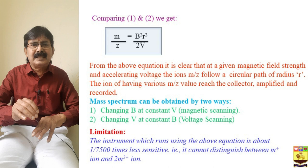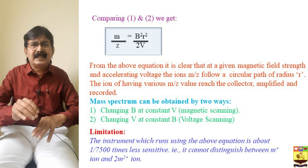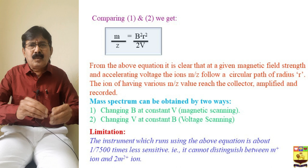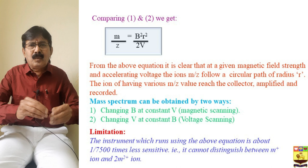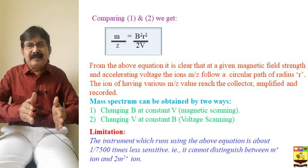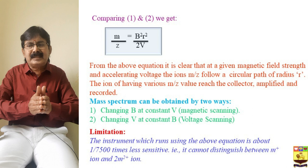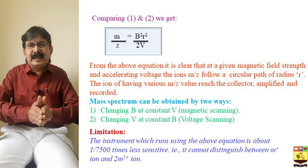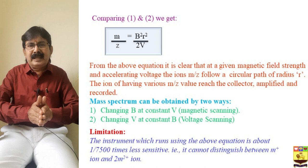Here we have a limitation regarding sensitivity — how well the instrument can separate one fragment from another. For example, if we have two fragments, one of 900 mass and another of 1000 mass, the difference is very small and this instrument cannot differentiate these two fragments. The sensitivity is very low — 1/7500 times less sensitive — and it cannot differentiate the M⁺ ion from the 2M²⁺ ion.